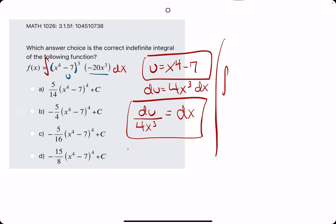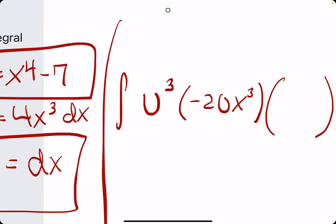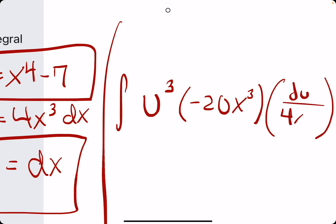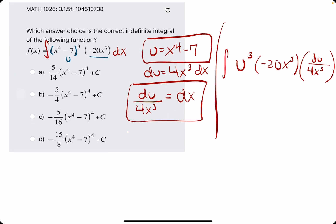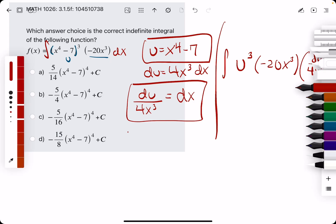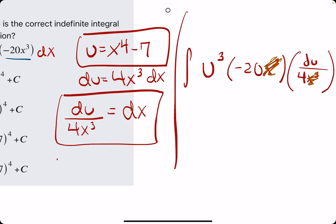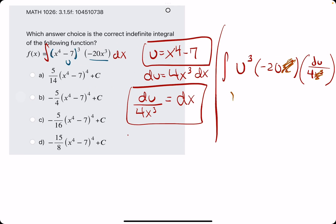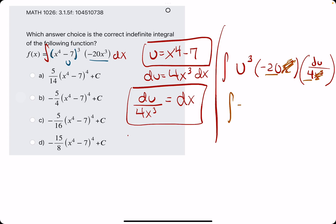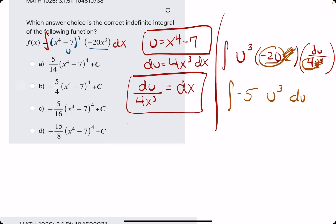We will replace the x to the 4th minus 7 with u, and the dx with du over 4x cubed. So we'll have u to the 3rd. We'll leave the negative 20x cubed for the time being. dx, we will replace with du over 4x cubed. The x's, again, should always cancel out, leaving us with just terms in u and du. Now we have negative 20 over 4, or negative 5.